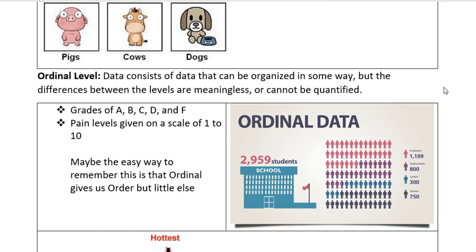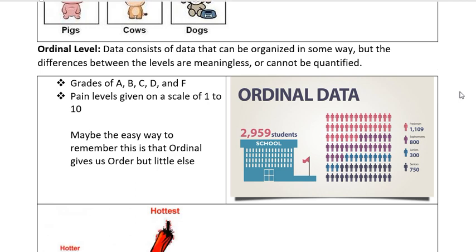Ordinal data is data that can be organized in some way, but the difference between the levels is meaningless or cannot be quantified. Likert scales, whenever you rate your professor or talk about how much you liked something, that's going to be a Likert scale. Yes, there's a 1 through 5, but it's not really that meaningful because my 4 might be your 3, somebody else's 5.